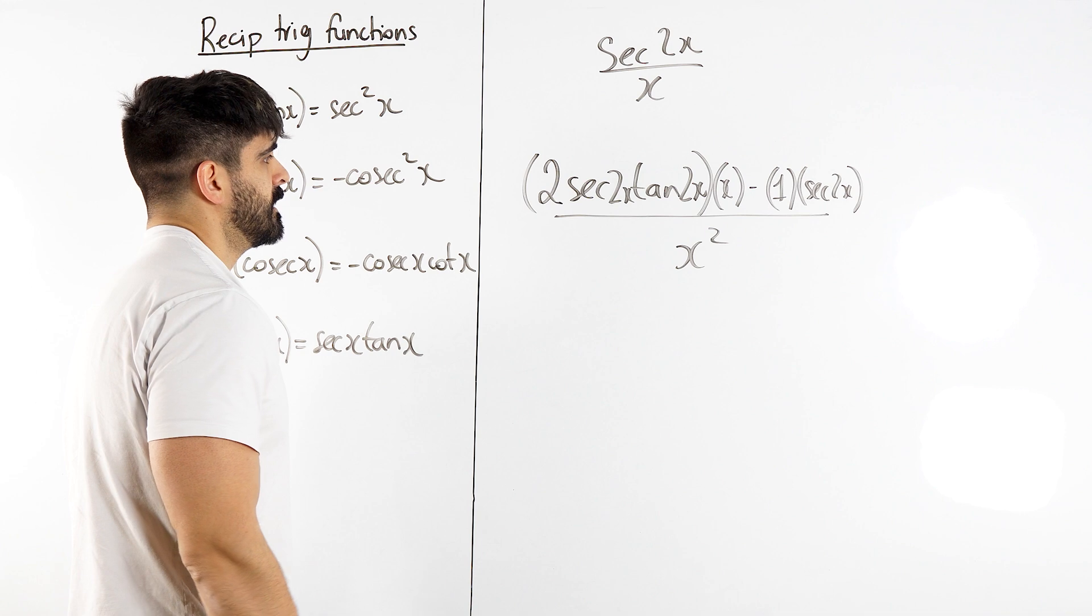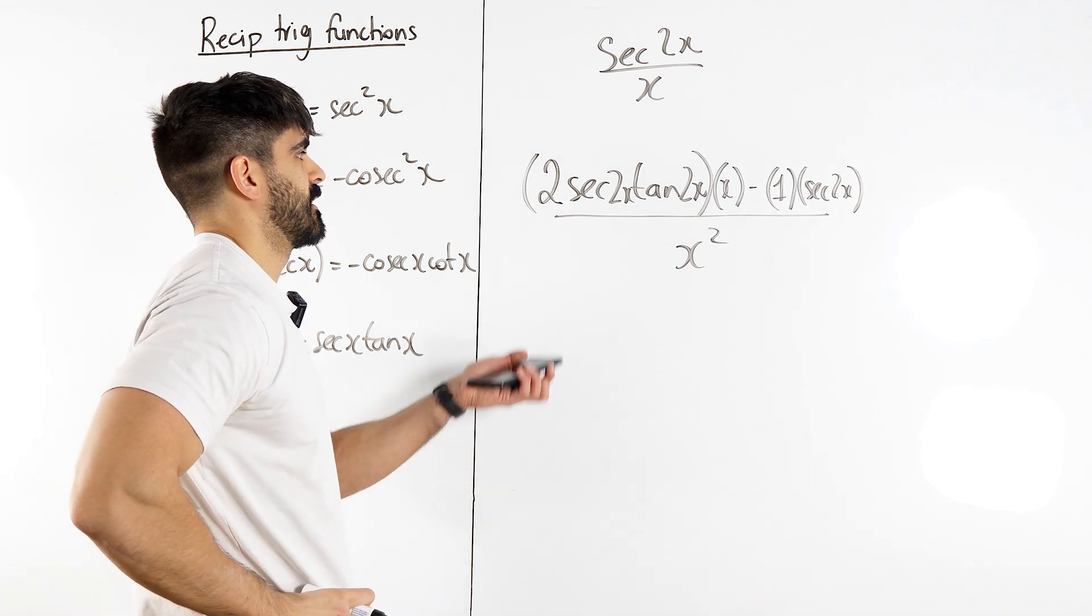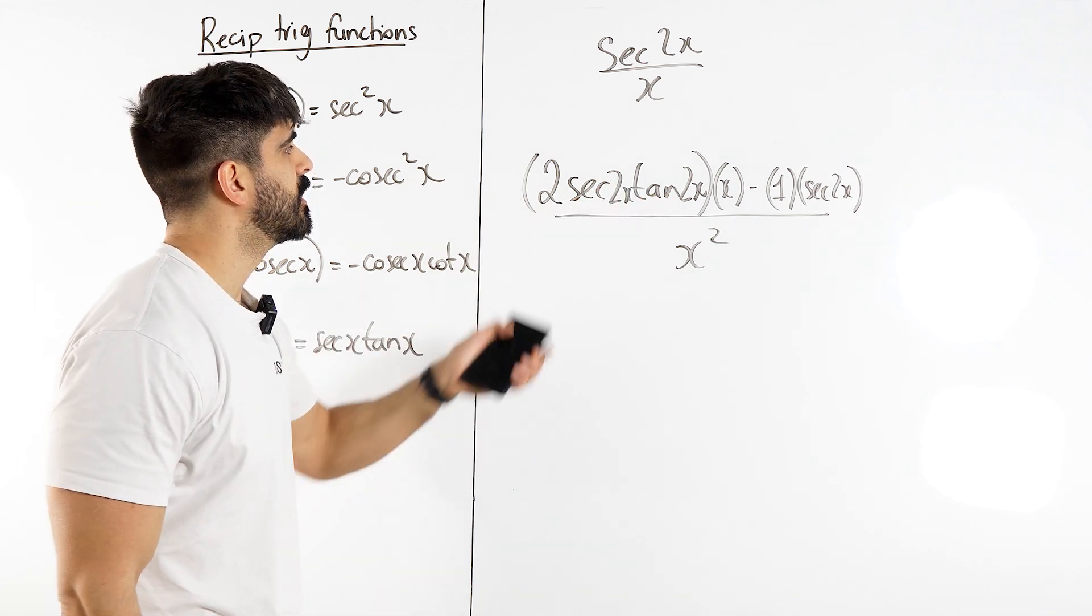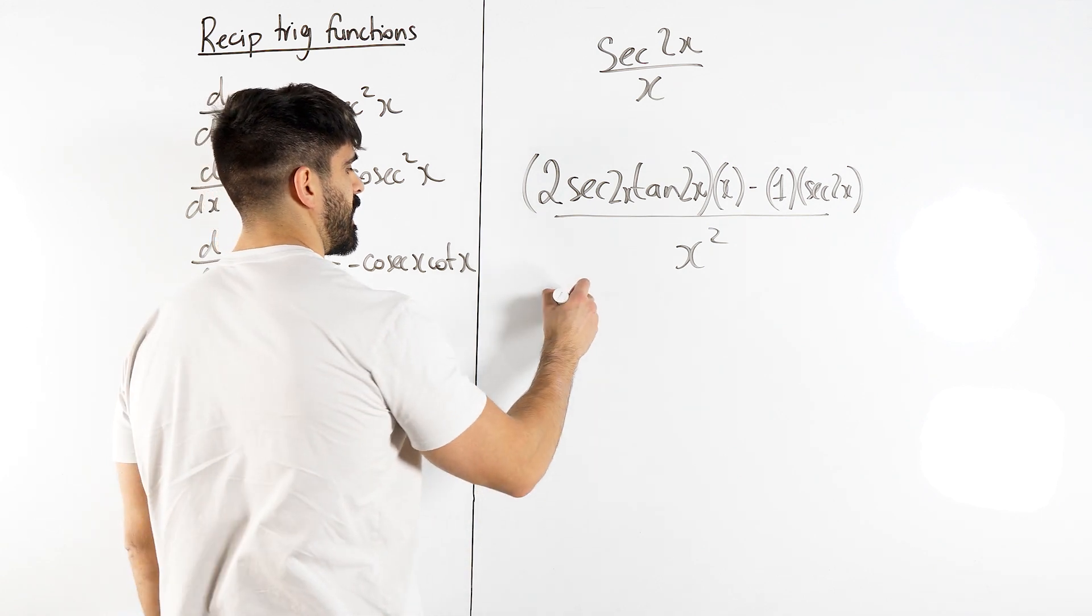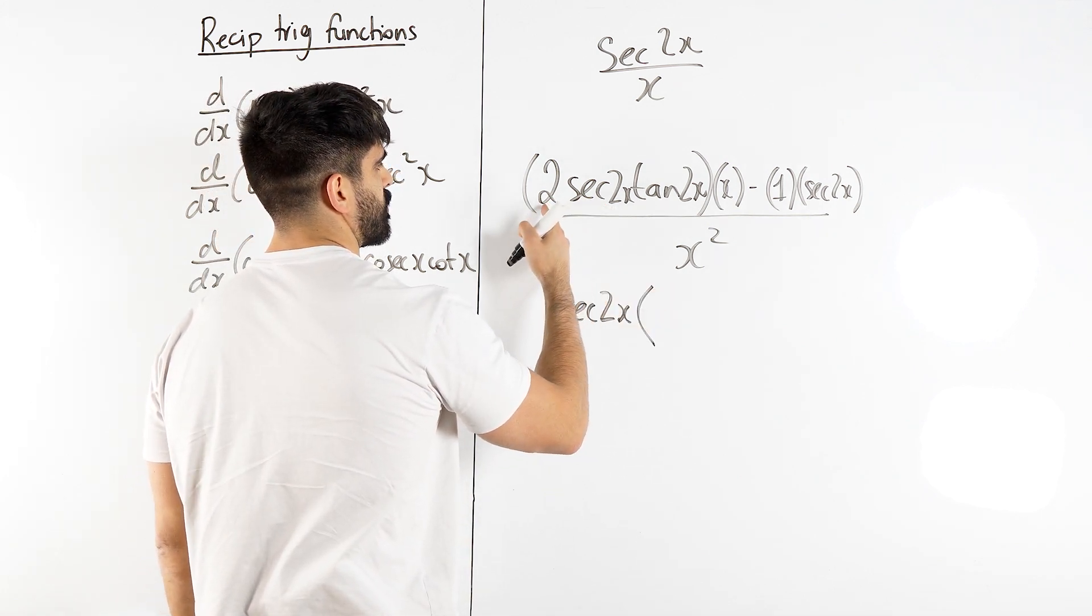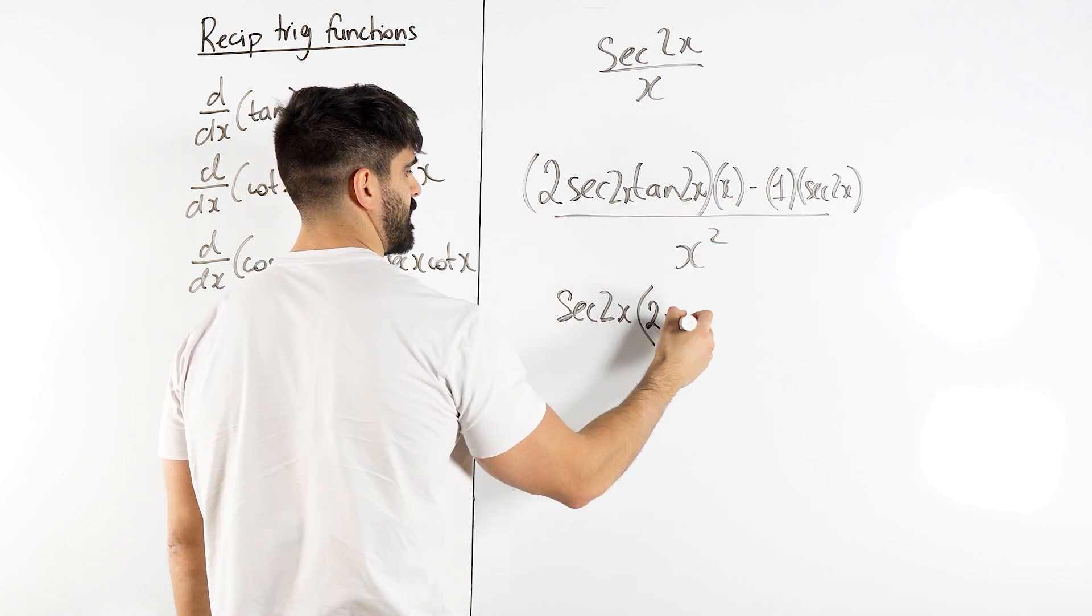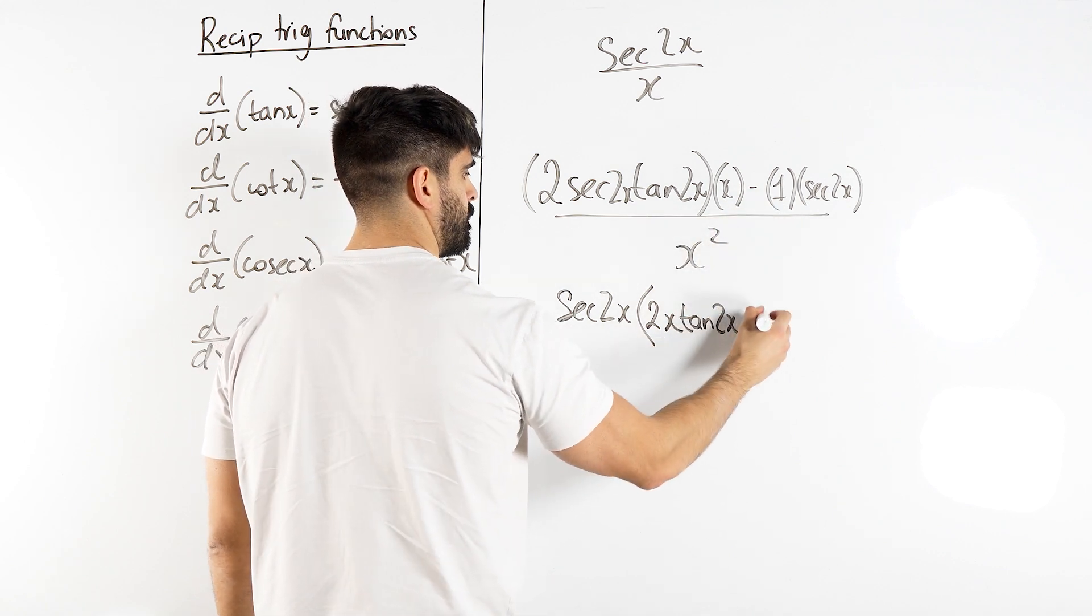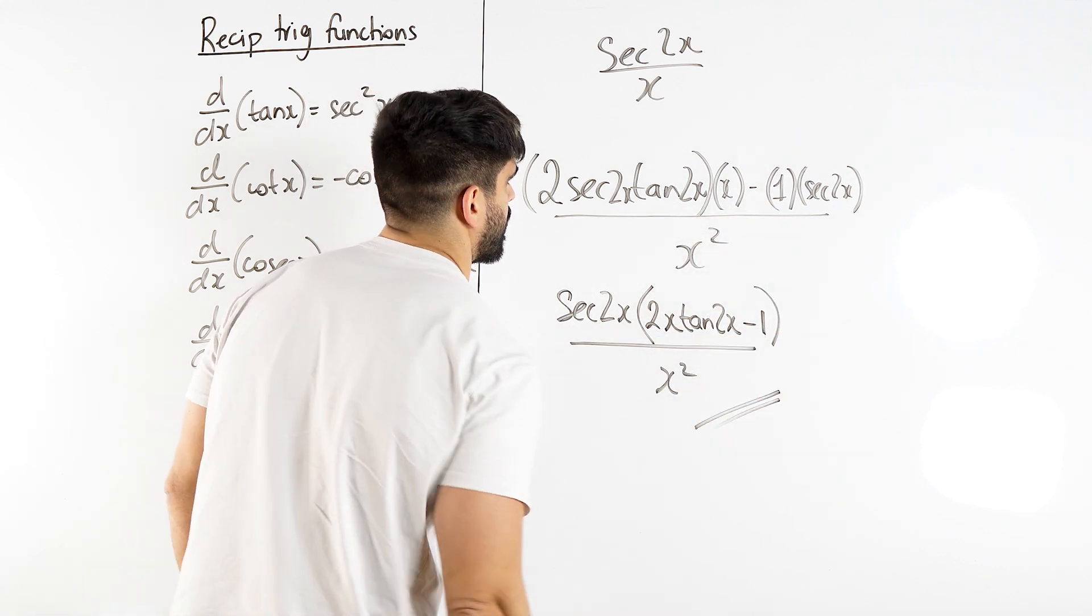Can you simplify this even more? Not really. Sec 2x, you have 1 over cos, that's sin over cos, definitely can't simplify. You could potentially factorize out a sec 2x if you want. If we take out that sec 2x, we'd be left with sec 2x times 2x tan 2x minus 1 all over x squared. We can leave it like that.